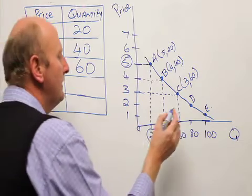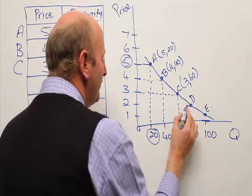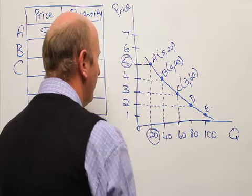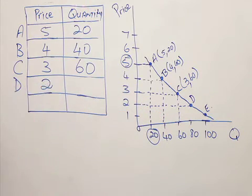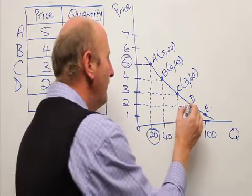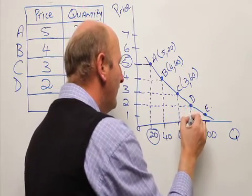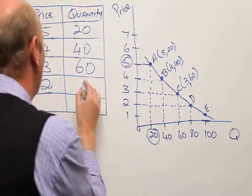Similarly, at D, draw a line across to the price axis. And then you find that at point D, the price is 2 grand. And the quantity at point D is 80.